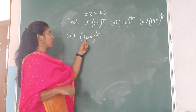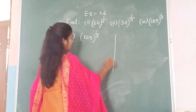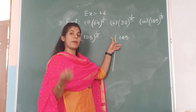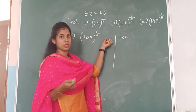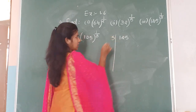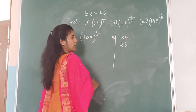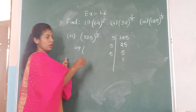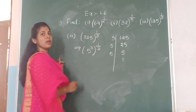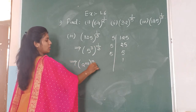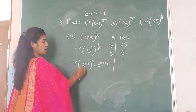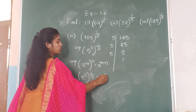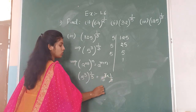The third one is 125 to the power of 1 by 3. 125 is not divisible by 2 or 3, so we take the next prime number 5: 125 = 5 × 25 = 5 × 5 × 5, so 125 = 5 to the power of 3. Then 5 to the power of 3, whole to the power of 1 by 3 — applying the law, 3 into 1 by 3, the 3s cancel. The answer is 5.